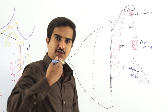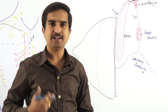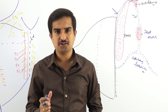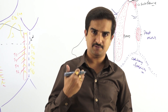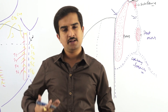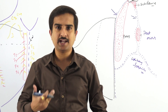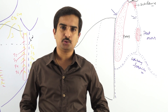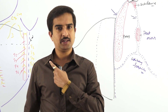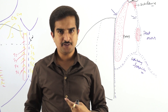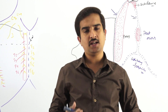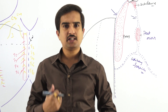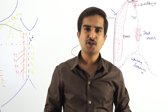Inferiorly, the pectoral fascia continues with the fascia of the thorax and blends with the rectus sheath. Anteriorly, it gives attachment to the sternum. So to summarize so far: superiorly attached to the clavicle, anteriorly attached to the sternum, and inferiorly it blends with the fascia of the thorax and the rectus sheath.